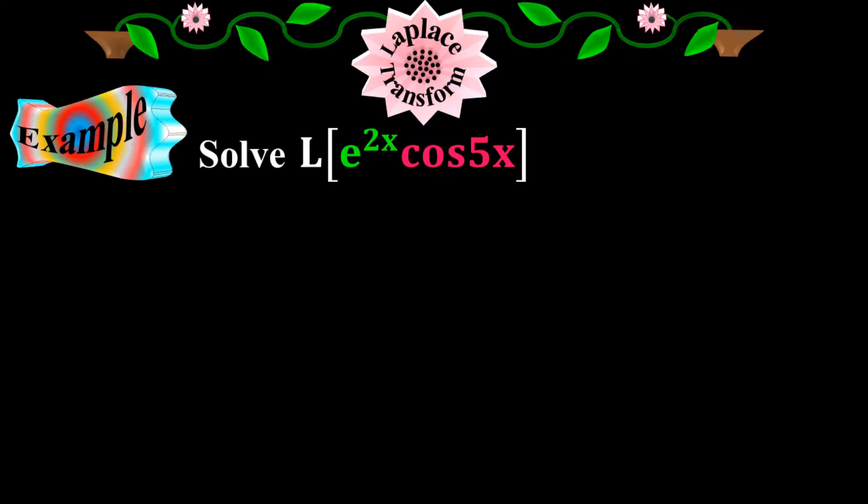You see here, the given function f of x is the product of two elementary functions. One is exponential function, which is e to the 2x, and the other is cos 5x, which is a trigonometric function.